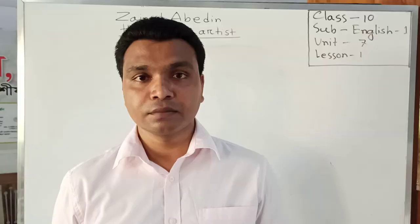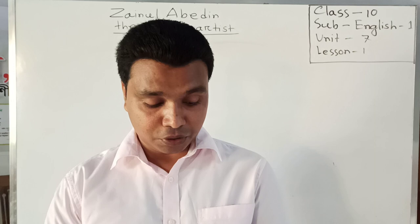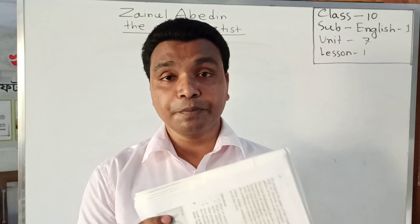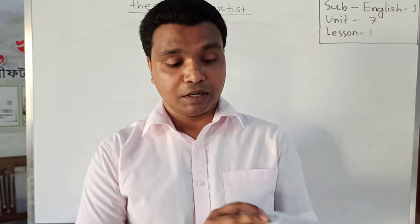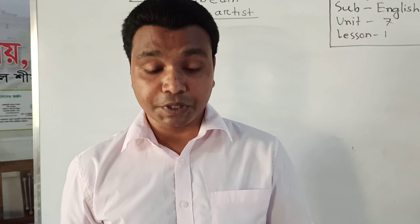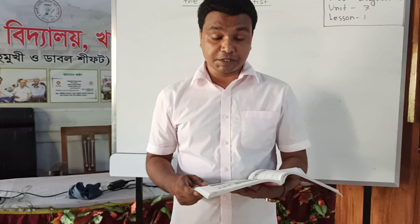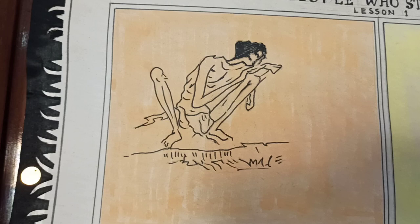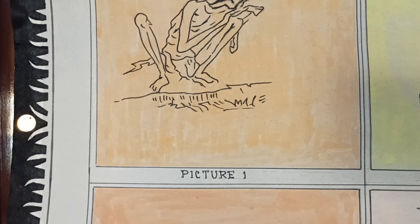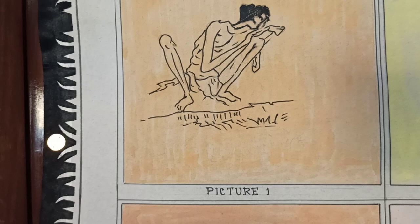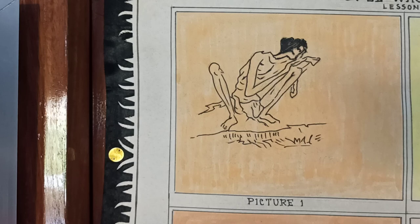Dear student, once again open your book, page number 92 and 93. Here you can see seven pictures by Zainul Abedin. Now I am going to describe these pictures. In picture number one, you can see a portrait of the famine in 1940 — it is a skeleton figure of a man who is about to die of starvation. It is one of the great sketches of Zainul Abedin. Picture number two portrays Santhal women — a sketch of two women or two sisters who are walking.